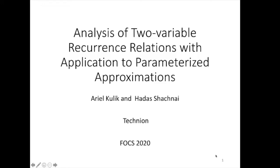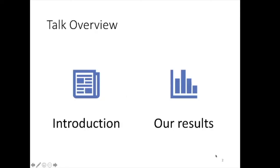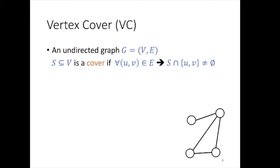Hello everyone, thank you for joining the talk about the paper 'Analysis of Two-Variable Recurrence Relations with Application to Parameterized Approximations.' My name is Ali Elkulik and the paper is joint work with my PhD supervisor Adas Shachnaim. It's going to be a 20-minute talk. We'll have a fairly thorough introduction presenting the main algorithmic idea of the paper, along with describing the mathematical problem we needed to solve in order to obtain the running time of our algorithms. Then we will briefly go over the main results, focusing on vertex cover.